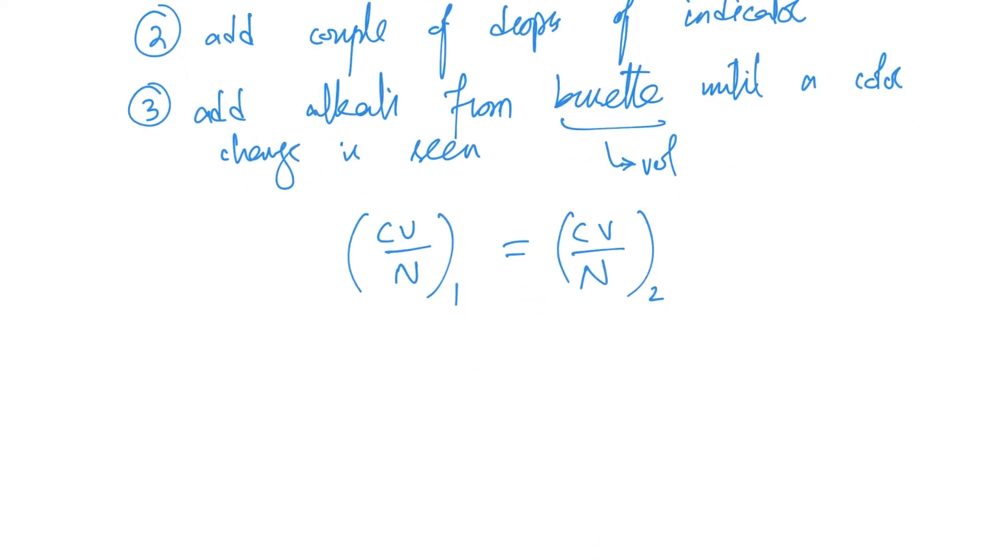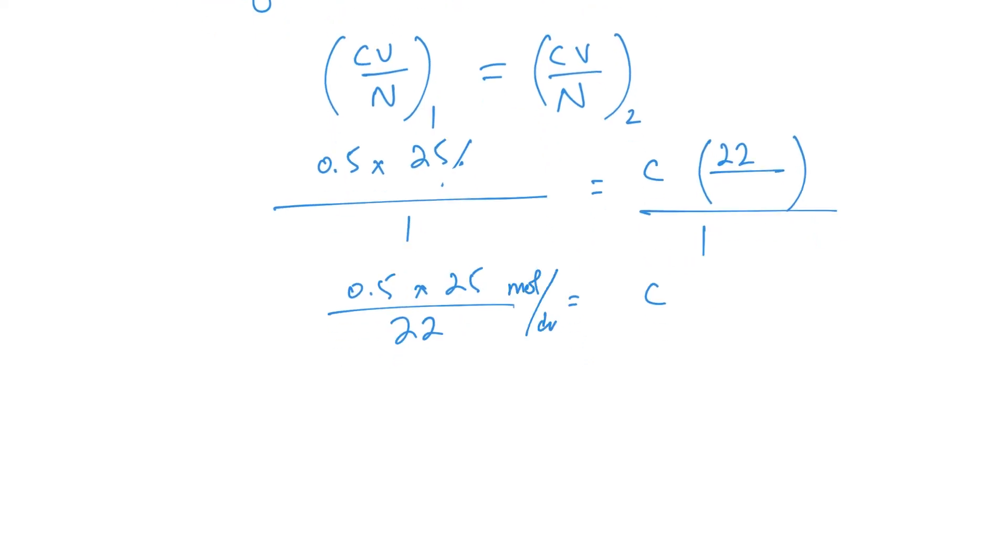Let's plug them in. My first solution is acid. I have 0.5 moles per dm³ and I have 25 cm³, 25/1000 dm³, and the N is 1. On this side, I have the alkali. I do not know the concentration, but I do know that the volume is 22 cm³. When I solve this, I end up with 0.5 times 25 over 22 equals to my concentration. Whatever this value is in moles per dm³, that is my concentration of the unknown solution.